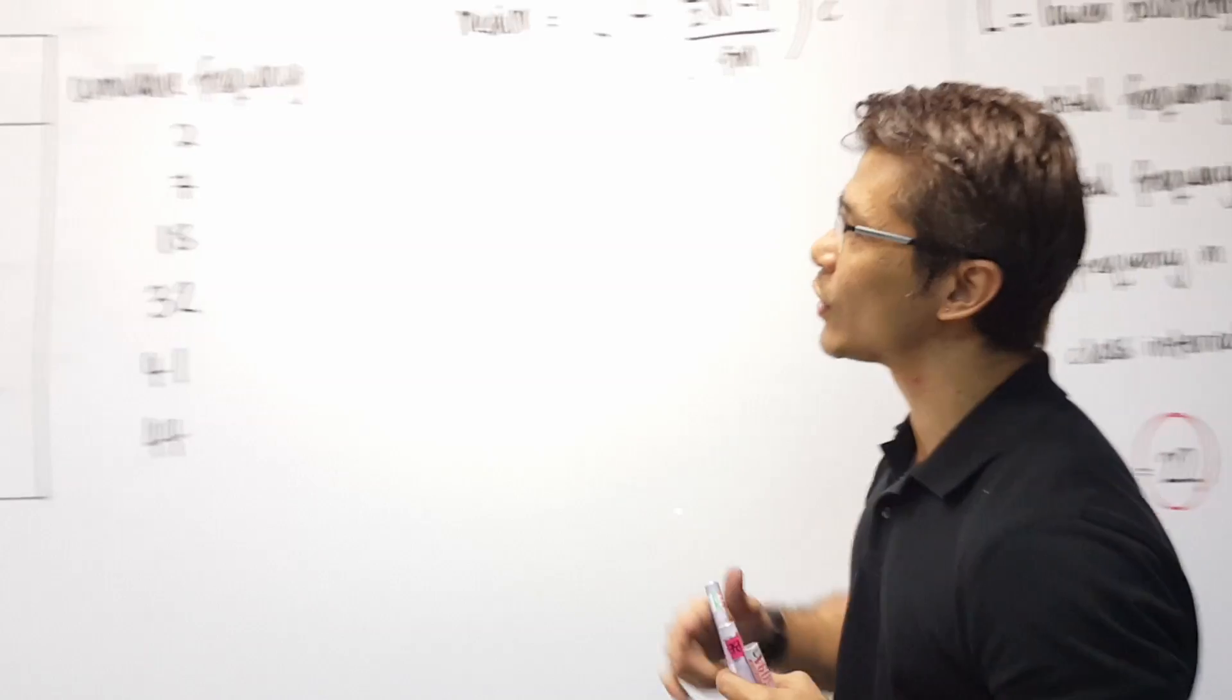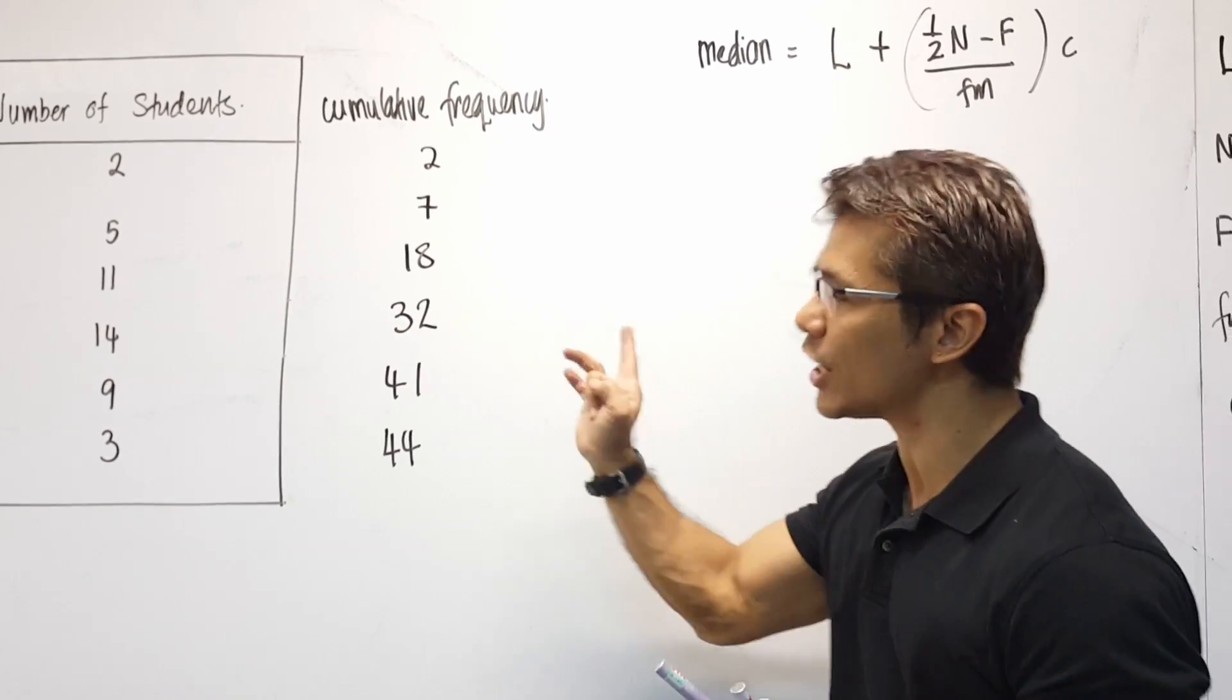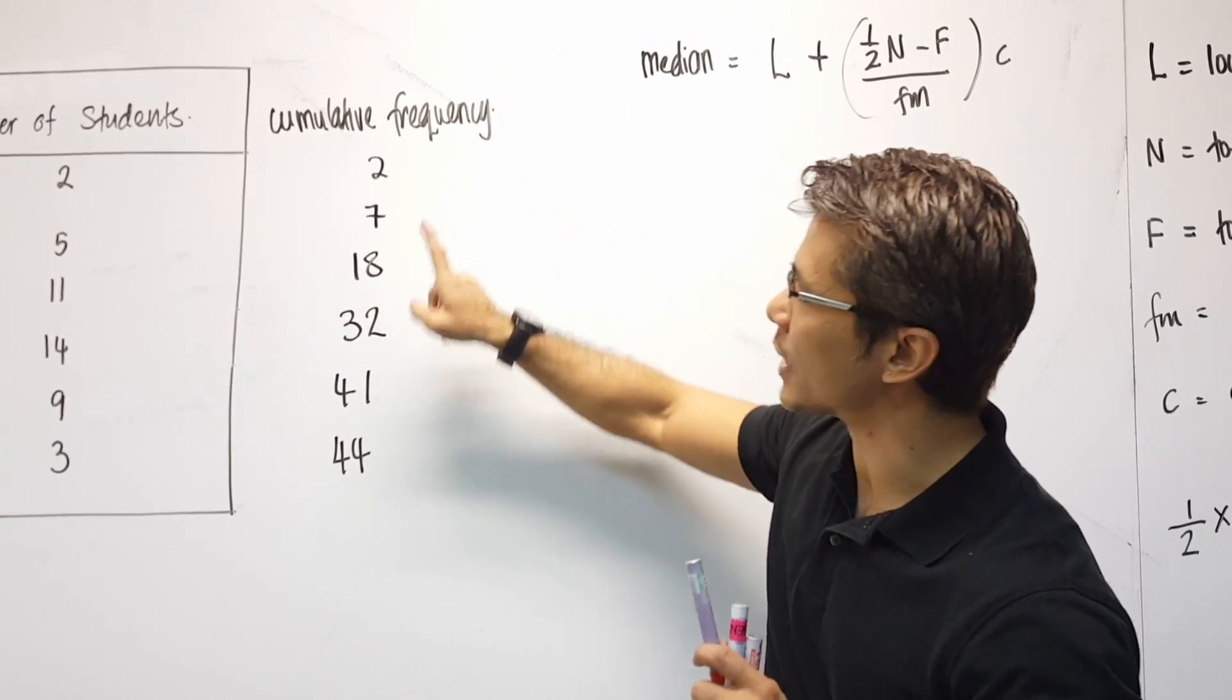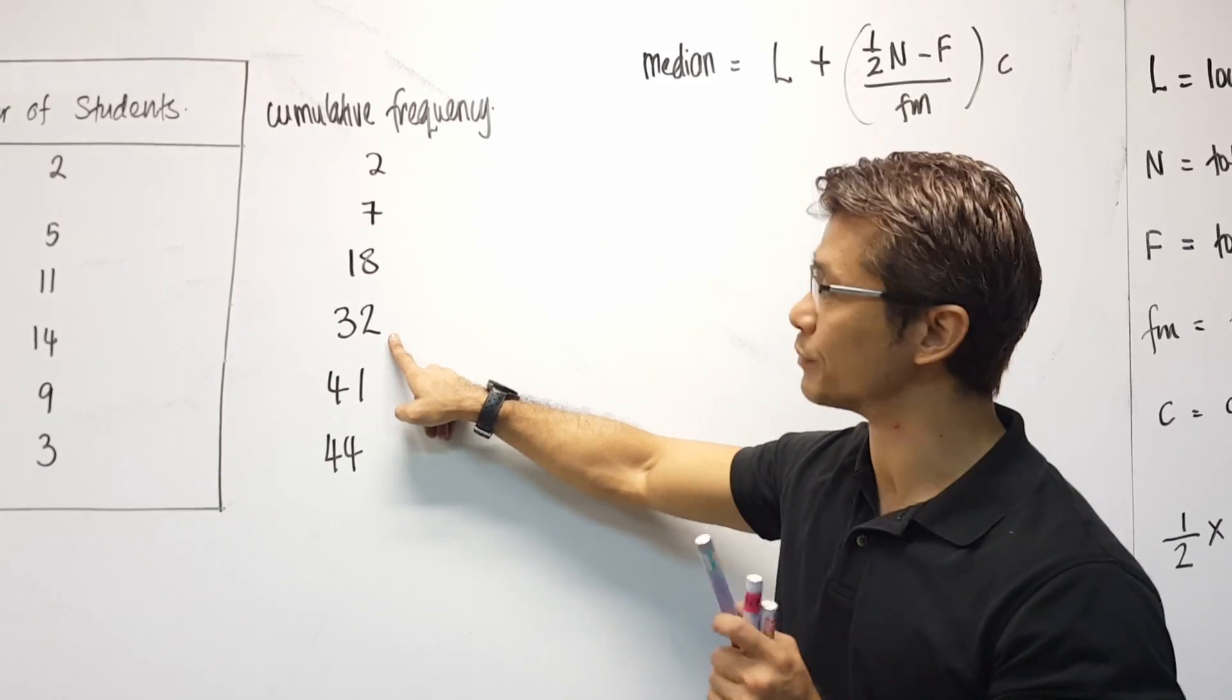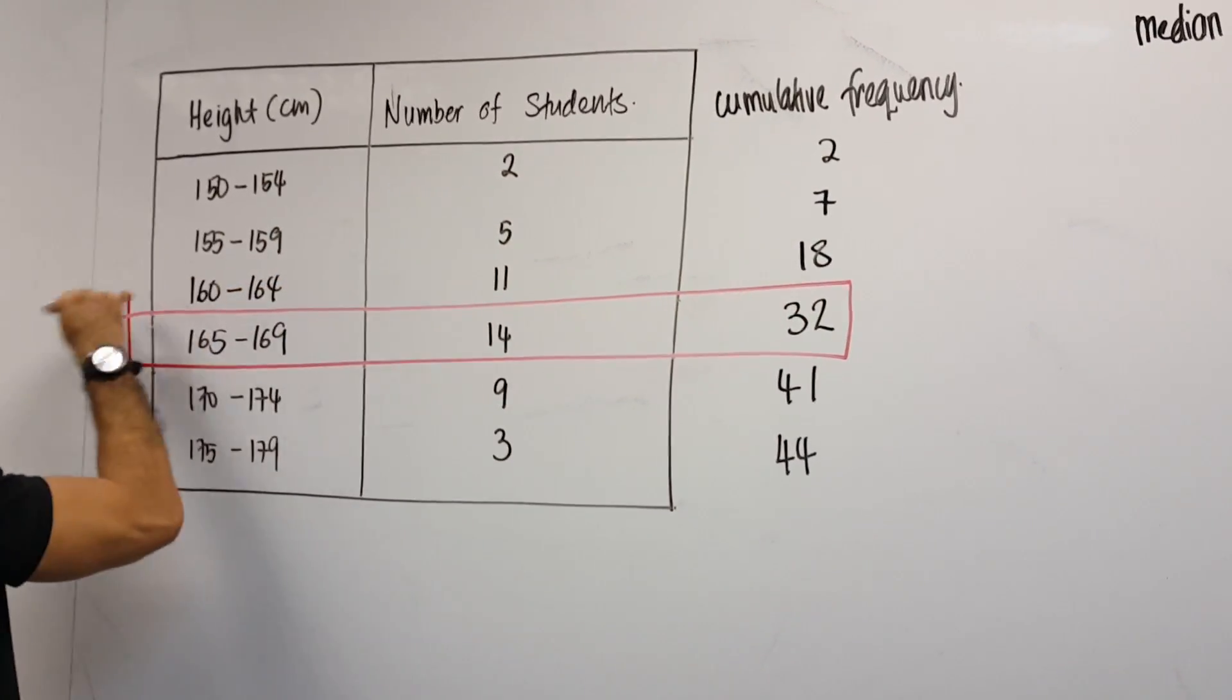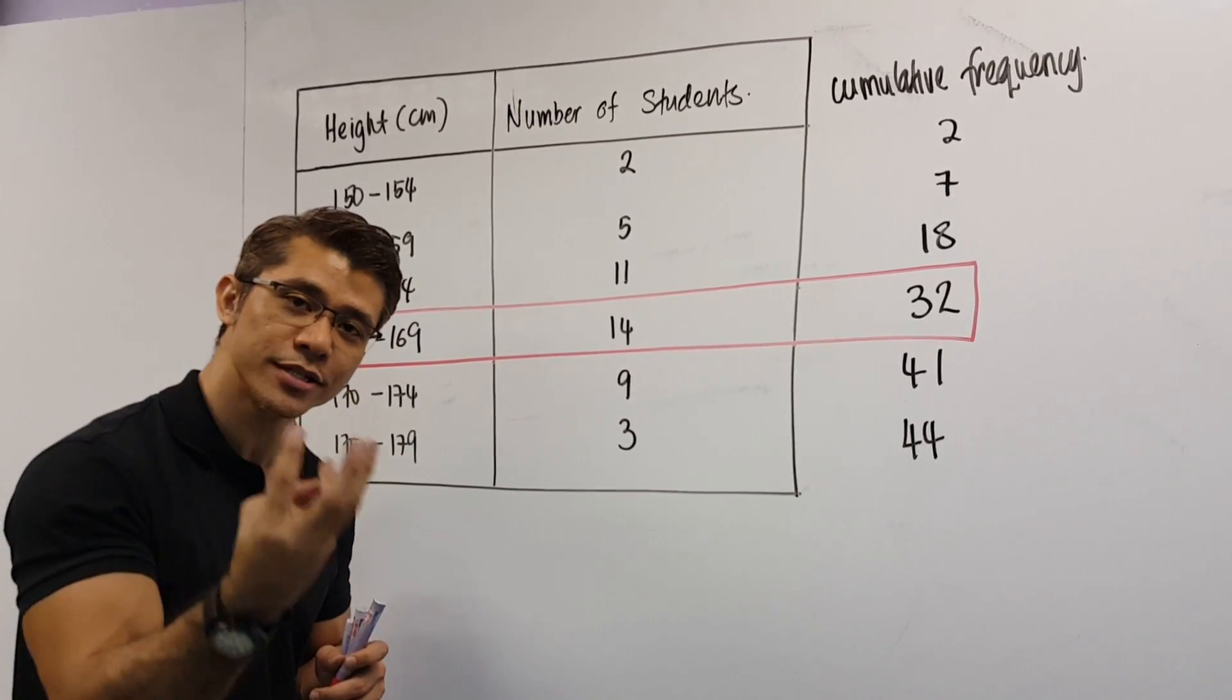Going back to our cumulative frequency table, I need to choose, to select, to pick the very first number that is larger than 22. So I can't choose 2, 7, 18, but I can choose 32. Remember, the first number larger than 22. So what I'm going to do now is I'm going to draw the box right here. And this box will help me find my five letters. Remember, L, N, F, fn, and C.